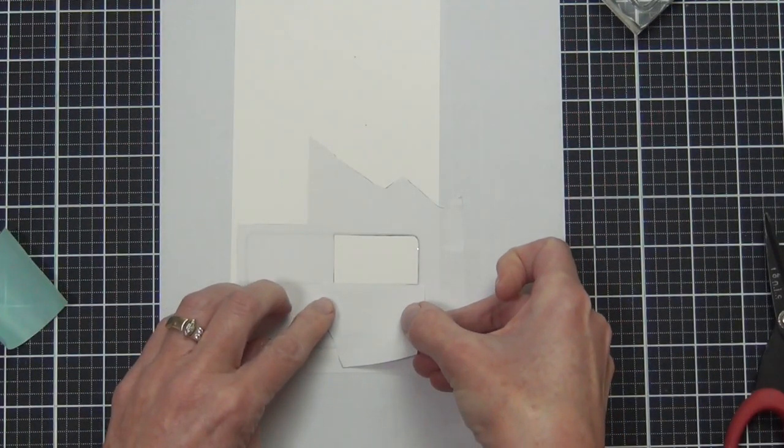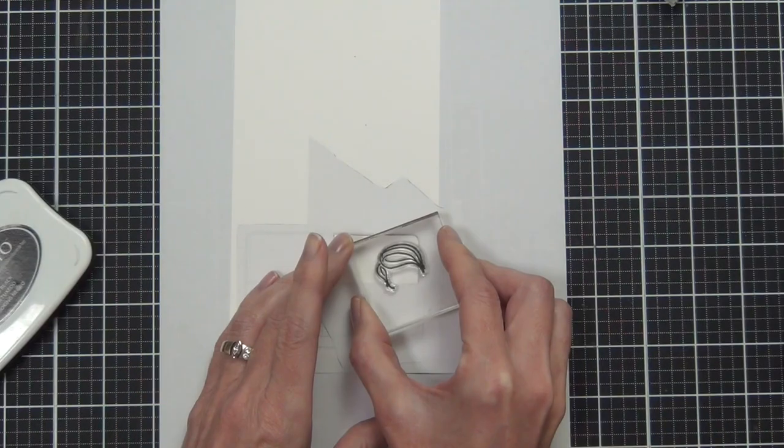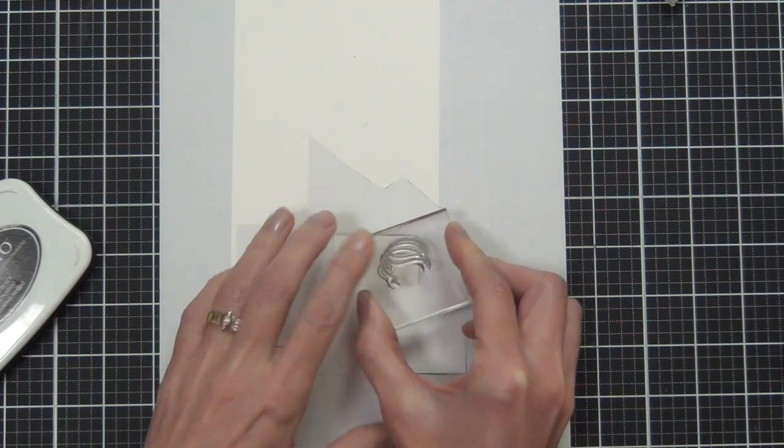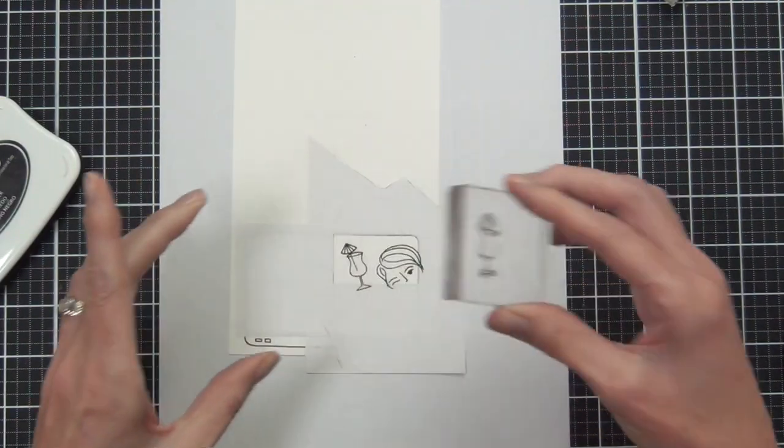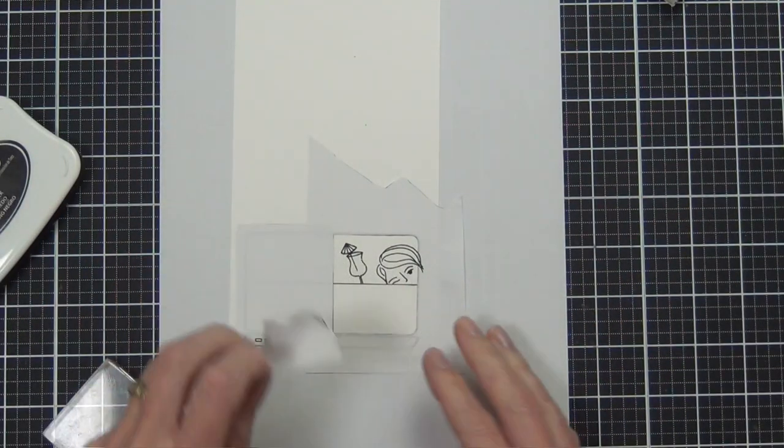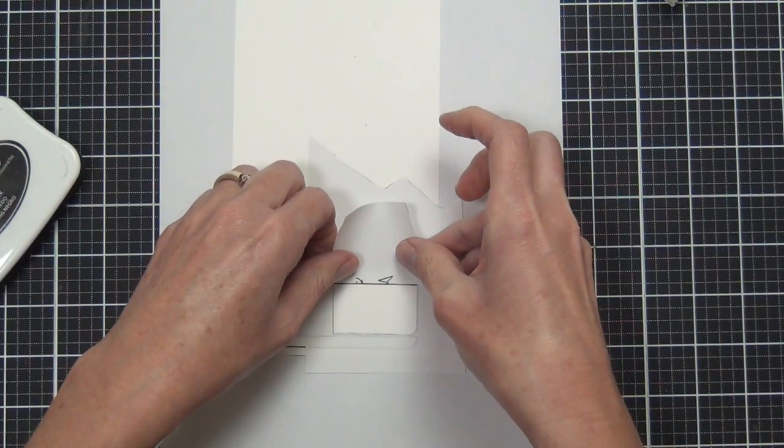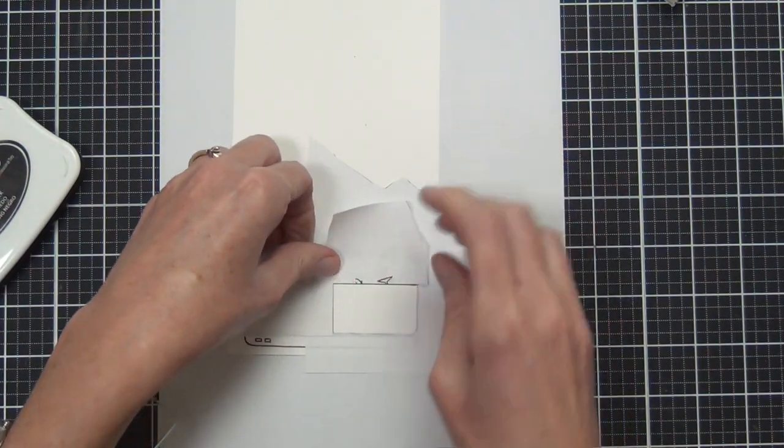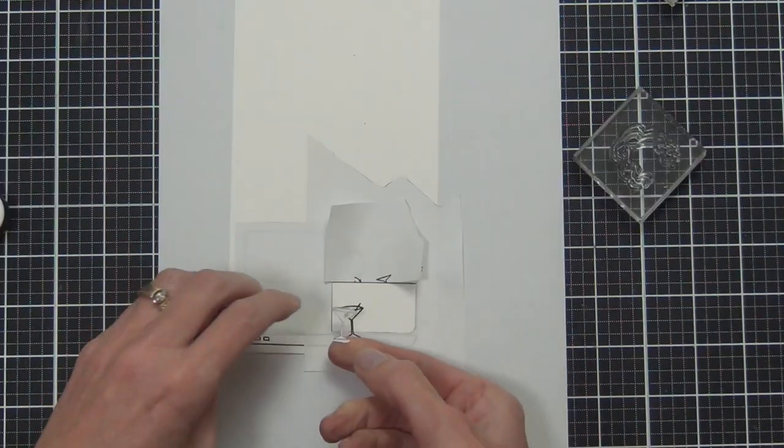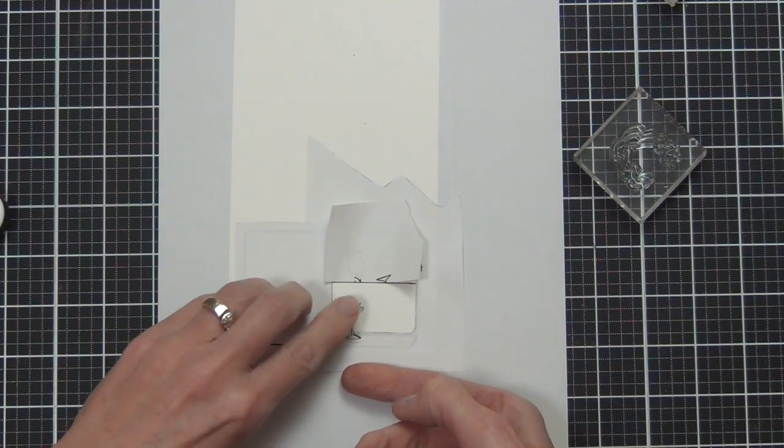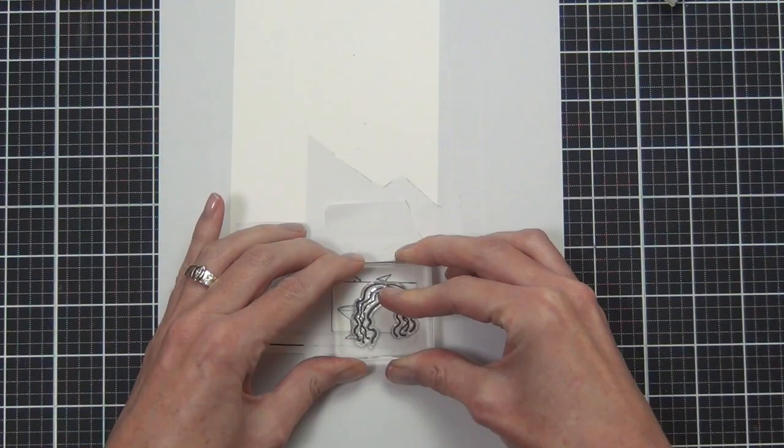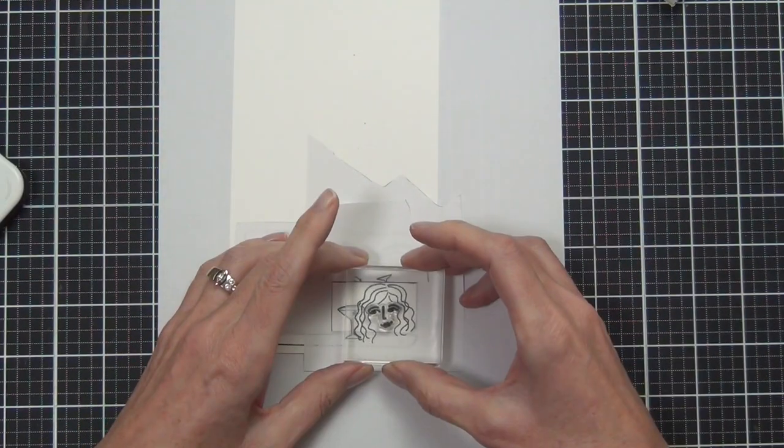Masking is your friend. When you want to create a scene, it's a really easy way to add images, to layer them up, to add depth to a scene, to combine stamps that weren't particularly meant to be joined together, to make something look like it's in front or behind.